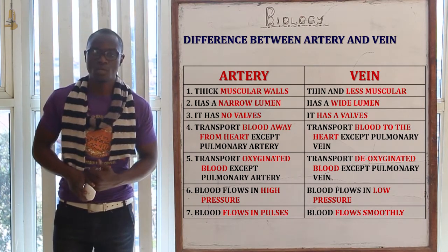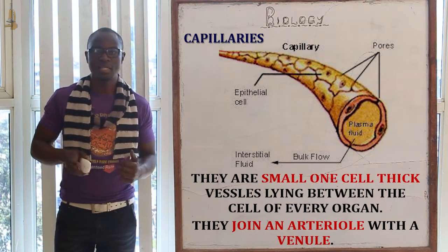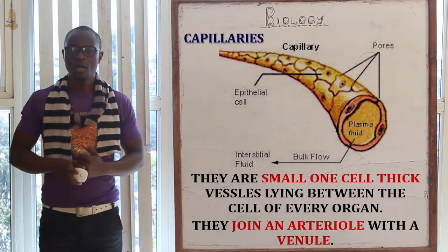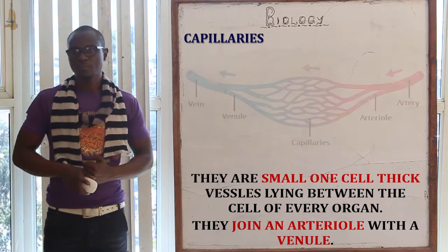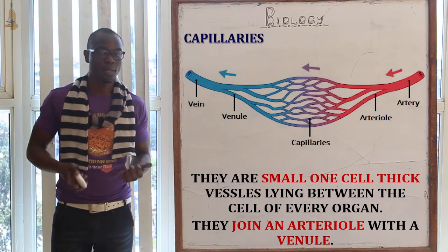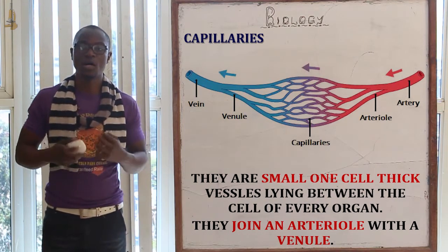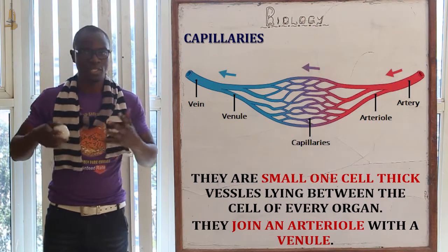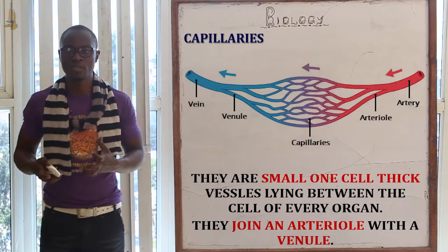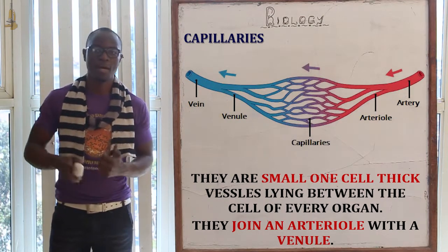Now let's look at capillaries. Capillaries are small, one-cell-thick blood vessels located between the cells of every organ and tissue in the body. They join an arteriole with a venule. The blood vessels network goes: arteries, then arterioles which are small arteries, then capillaries which connect to the tissues and cells of the body, then venules which are small veins, and finally the veins which bring blood back to the heart.